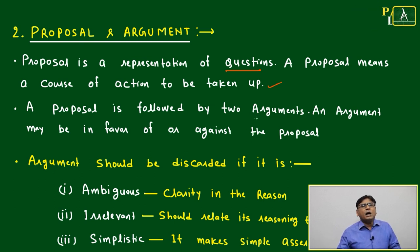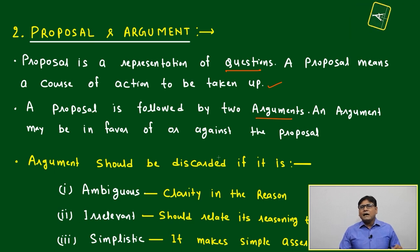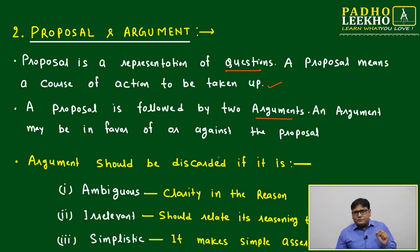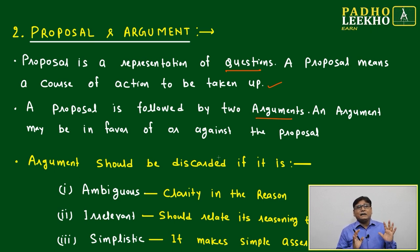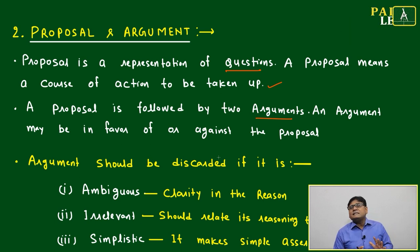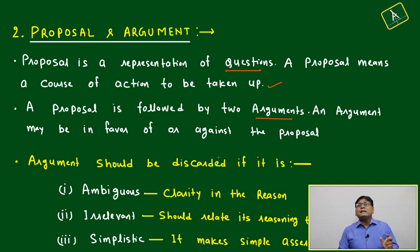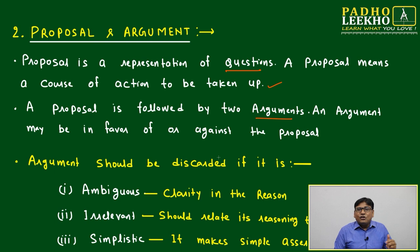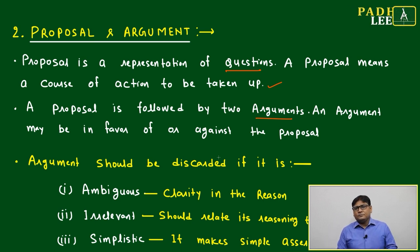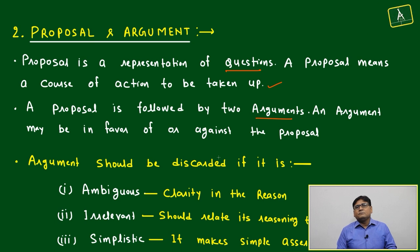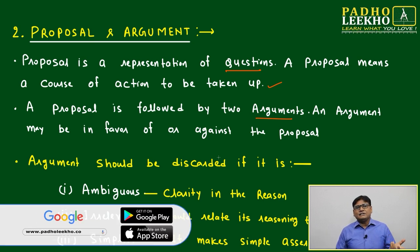A proposal is followed by two arguments, and an argument may be in favor of or against the proposal. We generally have a negative meaning of argument — we always feel that if something is argued, it will be opposite. But an argument can be in support or against; both can be possible. It may be in favor or against, and in both ways we can define it as strong or weak. If it is strongly opposing the proposal, we can say it is strong — whether negative or positive. If it is weakly supporting or opposing, we can say it is weak.